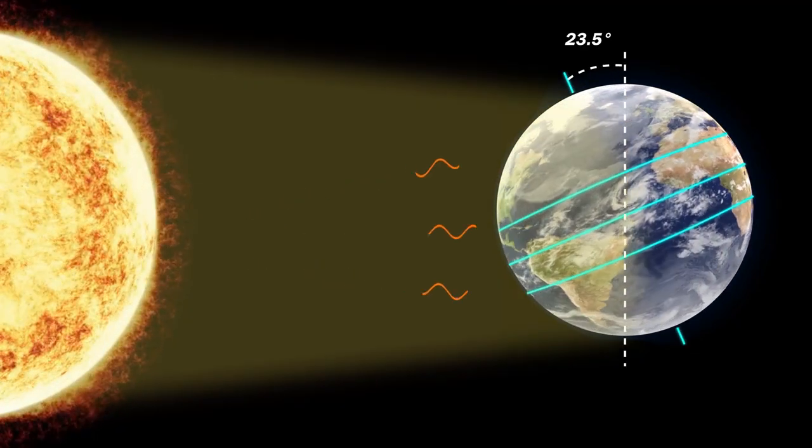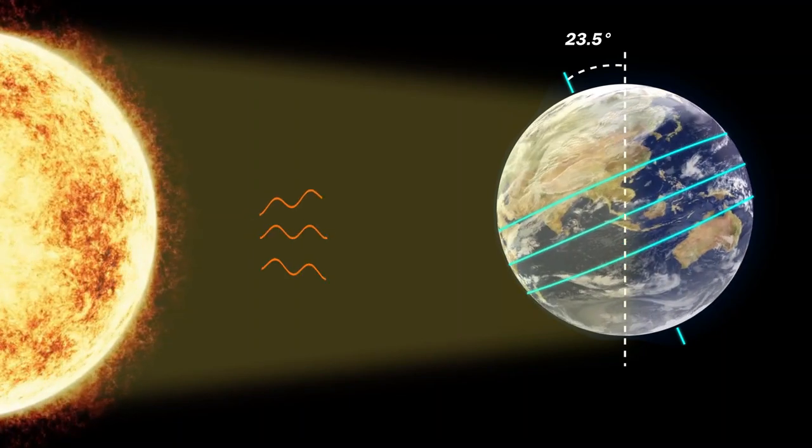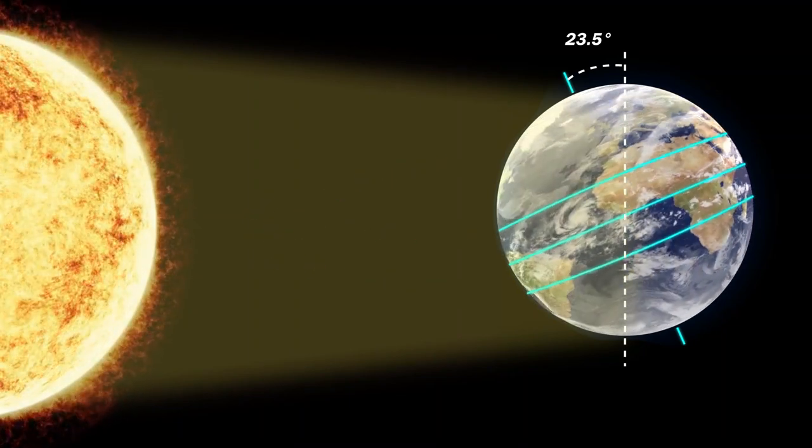Earth is tilted on its axis at an angle of about 23.5 degrees. Due to this axial tilt, the sun shines on different latitudes at different angles.